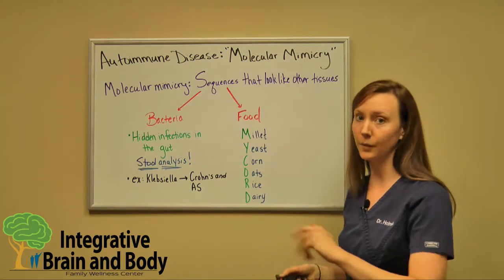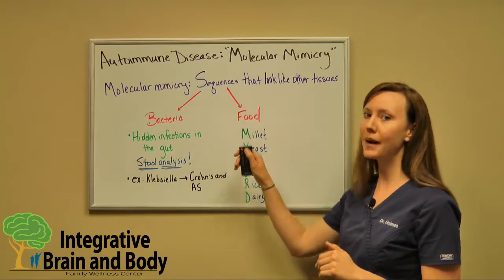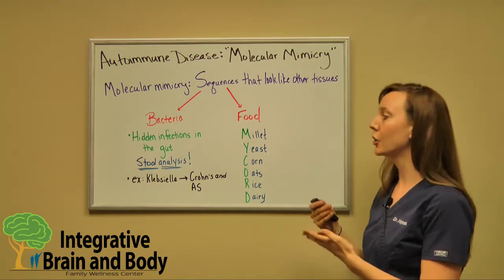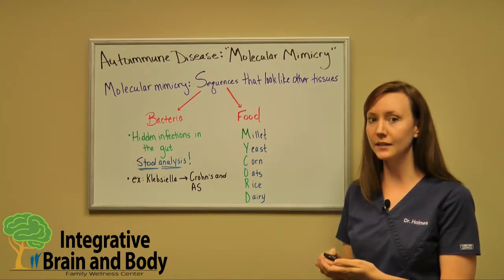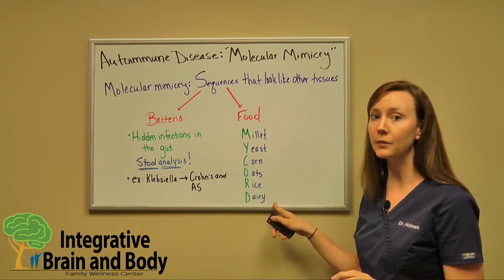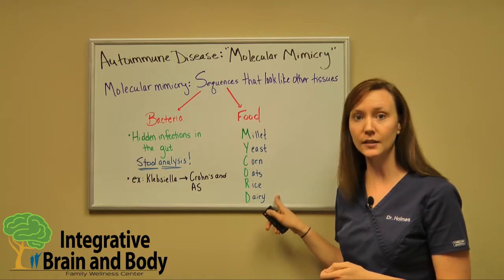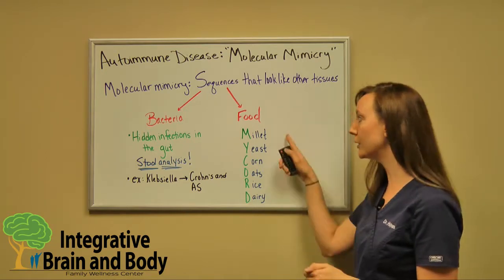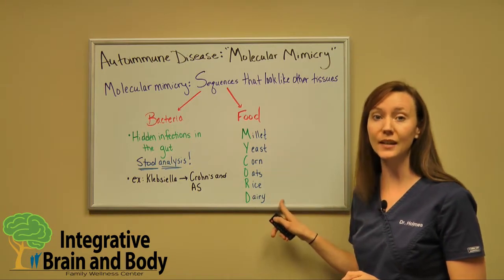You will see much bigger results. It's called cross-reactivity — foods like millet, yeast, corn, oats, rice, and dairy all have proteins that our body will mistake for gluten. So if you have a gluten sensitivity, or even celiac disease, I would absolutely avoid these, because your body is going to think it's gluten.